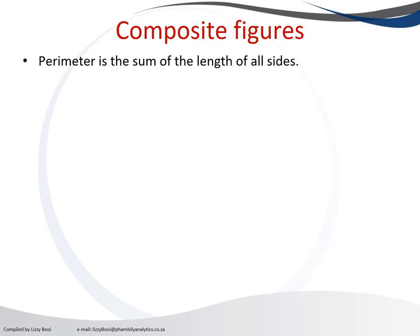To calculate the perimeter, still the same, we add all the sides. So let's look at this composite figure. As you can see, there are two figures here. If I draw a line here, you can see that the top part is a square and the bottom part is a rectangle.